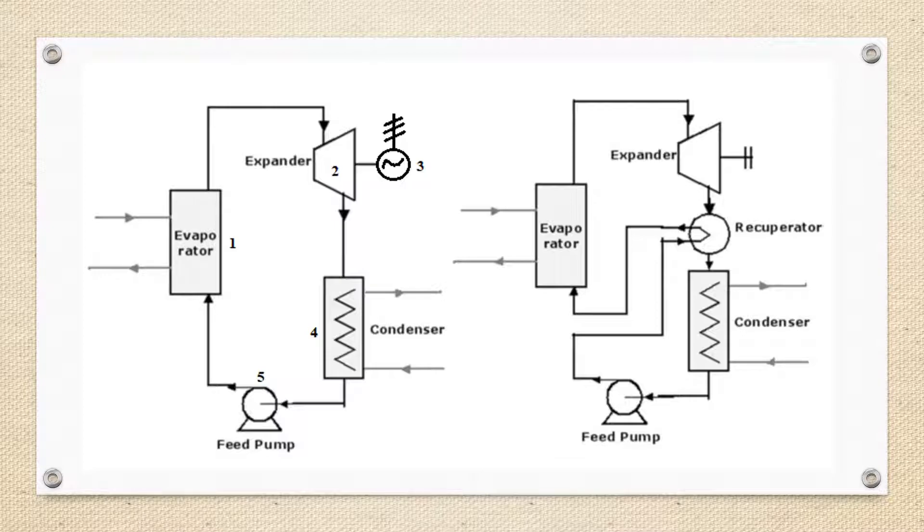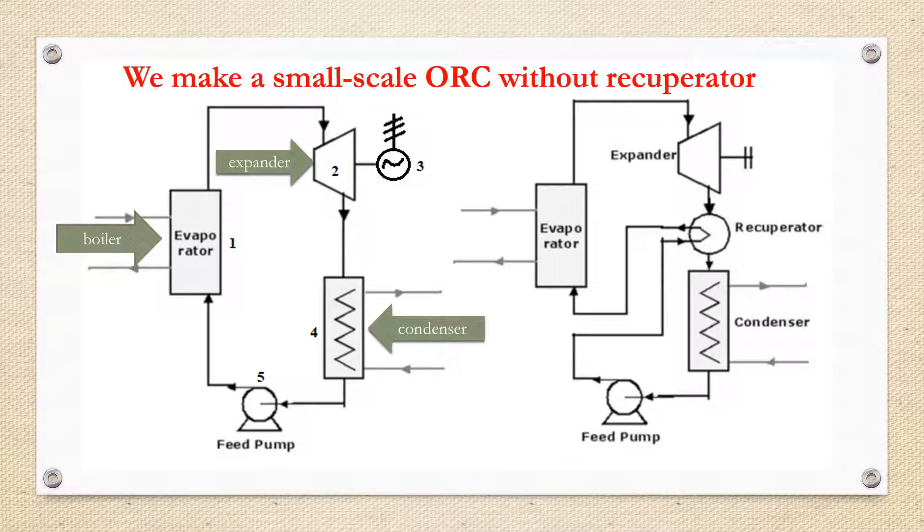The working fluid is pumped to a boiler where it is evaporated, passed through an expansion device (turbine or other expanders), and then through a condenser heat exchanger where it is finally re-condensed. We make a small scale ORC with a recuperator, so the basic cycle is very similar to the traditional steam cycle.